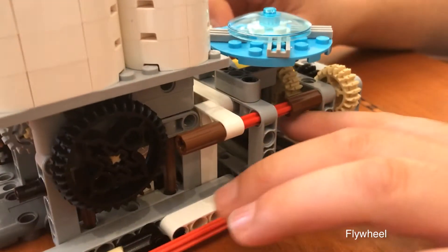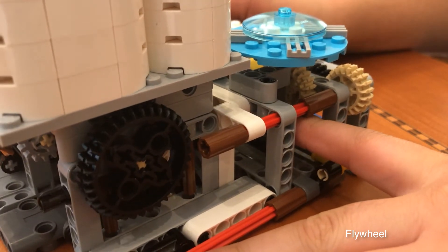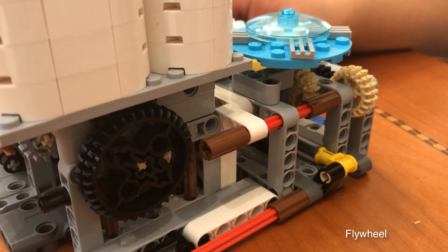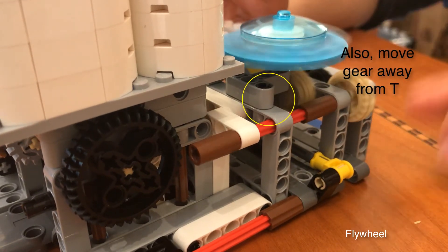Next, put your hand underneath the flywheel and push down the gear directly underneath it. By doing this, it should make the flywheel more smooth.